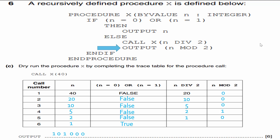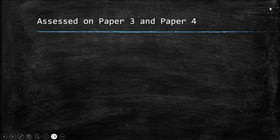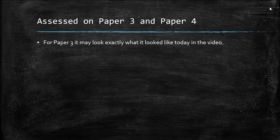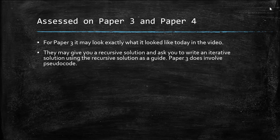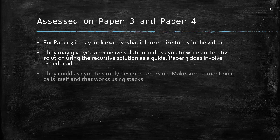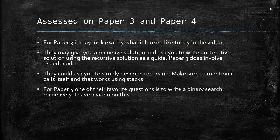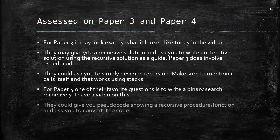Let's wrap up by looking at what could appear on Paper 3 and Paper 4. This is a popular topic on both papers. For Paper 3, you may have to complete a trace table, write an iterative solution given a recursive one, or describe recursion in pseudocode — make sure to mention it calls itself and uses stacks. For Paper 4, a favourite question is to write a binary search recursively, or convert pseudocode of a recursive procedure to actual code.